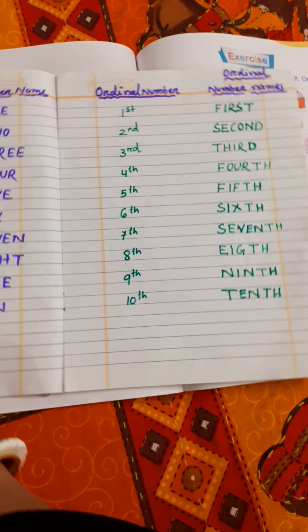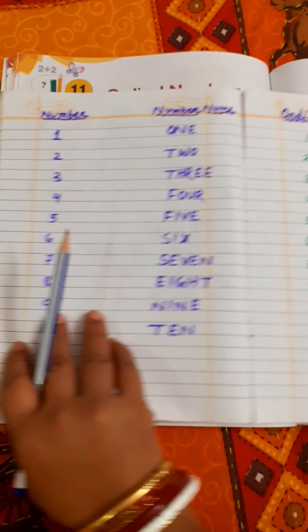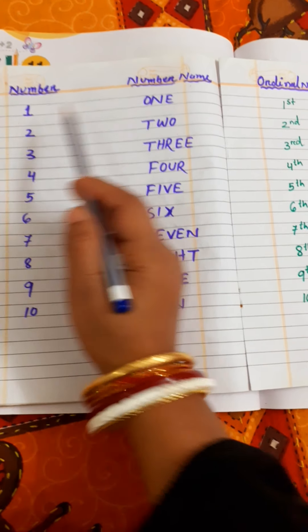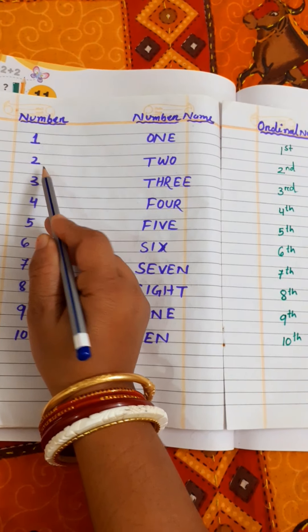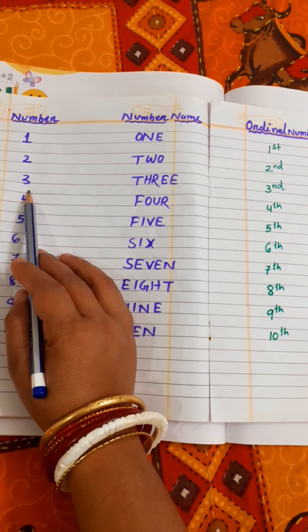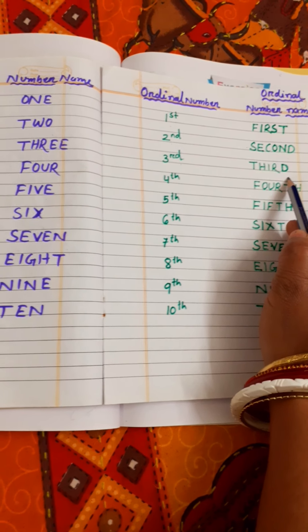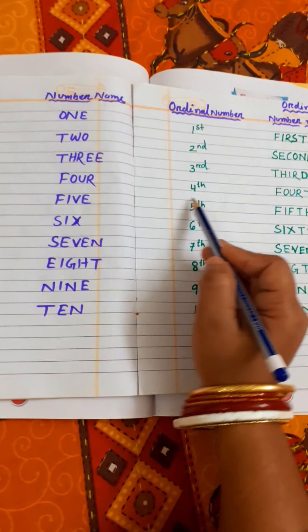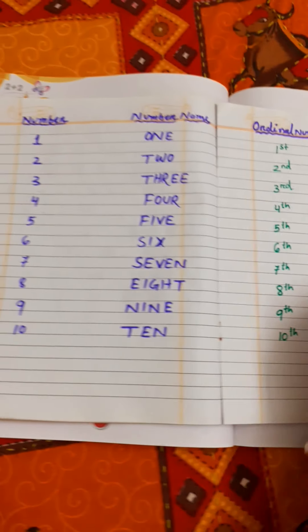In ordinal numbers, one will be written as first — F-I-R-S-T, first. Two will be written as second — S-E-C-O-N-D, second. Three will be written as third — T-H-I-R-D, third.